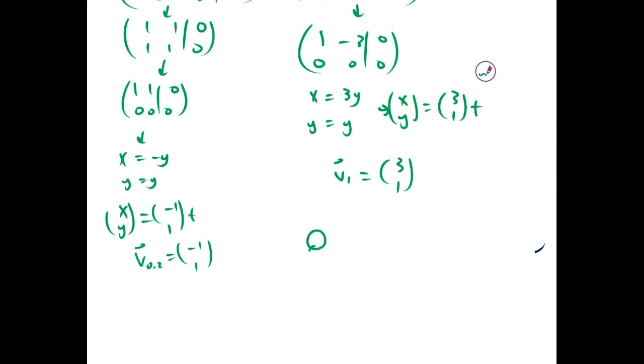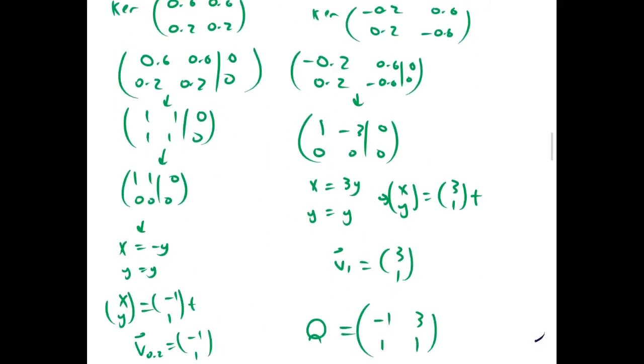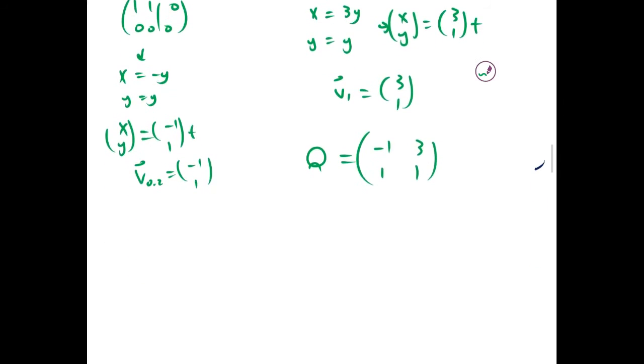Our change of basis matrix Q is (-1, 3; 1, 1). And Q inverse is 1 over (-1 - 3) times (1, -3; -1, -1), which we can also write as (1/4)(-1, 3; 1, 1).